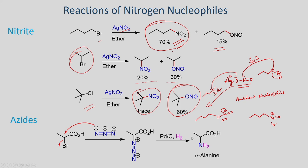The next example involves the reaction of azide with alpha-bromo carboxylic acid. The azide can act as a nucleophile and undergo substitution with the alkyl bromide to give the intermediate, which can be readily reduced using palladium on charcoal as catalyst in the presence of hydrogen — hydrogenation — to give alpha-alanine as the product.